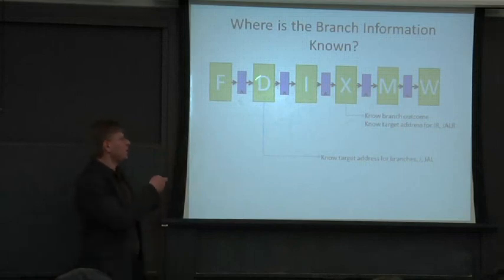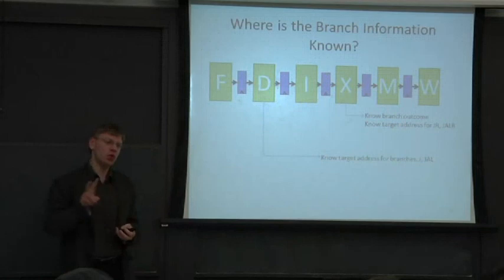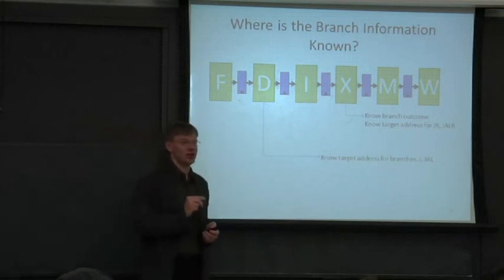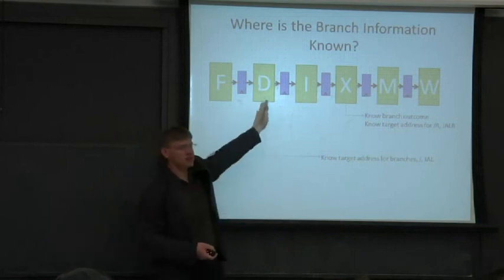So at least out here, by the time we're done, we have both of the addresses that the branch could potentially go to. It could go to either the fall-through address or the branch target. We know that at the end of the decode stage.